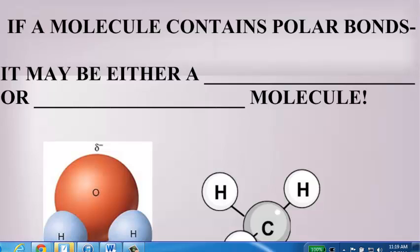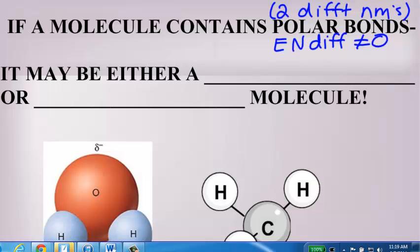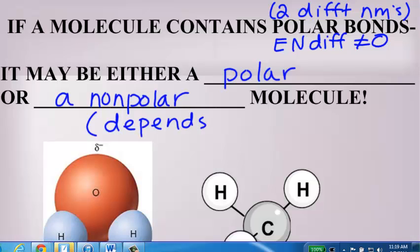However, if the molecule has polar bonds, two different nonmetals, the EN difference does not equal zero, then depending on its shape, you may have either a polar or a nonpolar molecule. It just depends on the shape. Because the bond is polar, which means there are partial charges, those partial charges may be arranged in such a way that they negate each other and cancel each other out. Then you would have a nonpolar molecule. But if they're arranged in such a way they don't cancel each other out, they're a polar molecule.